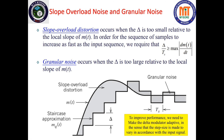To improve performance, we need to make the delta modulator adaptive, meaning the step size is made to vary in accordance with the input signal. If the signal is increasing rapidly, the step size should be larger; if it is increasing slowly or decreasing, the step size should be smaller. In this way we can cope with granular noise. That's all about delta modulation. Thank you.